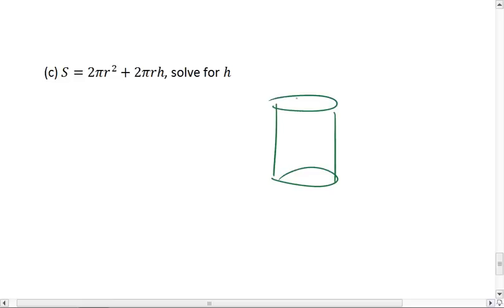Because the 2 pi R squared is the area of the bottom and top circle, and 2 pi R H is the area of the side. So basically the label that wraps around the can.